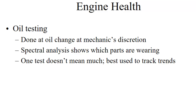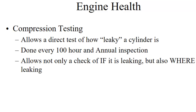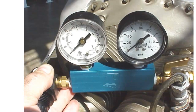Oil testing is not cheap, so people don't do it often on small aviation engines, but it's done a lot on turbine engines. Compression checking is another way to gauge engine health. It allows us to test how leaky a cylinder is — whether the rings are sealing inside the cylinder and whether the valves are sealing in the cylinder head. This is a differential pressure checker, and we may take time in class to actually run a compression check on an engine so you can see how it works.